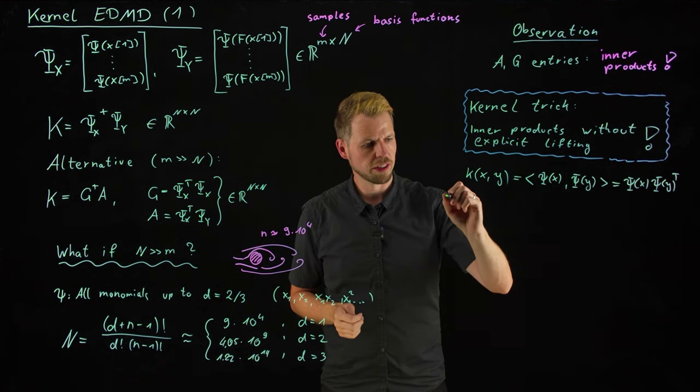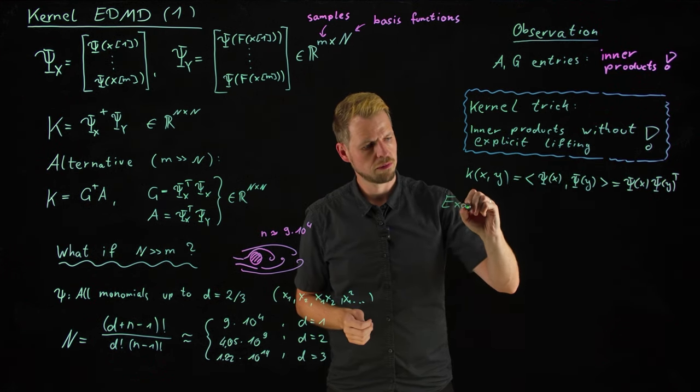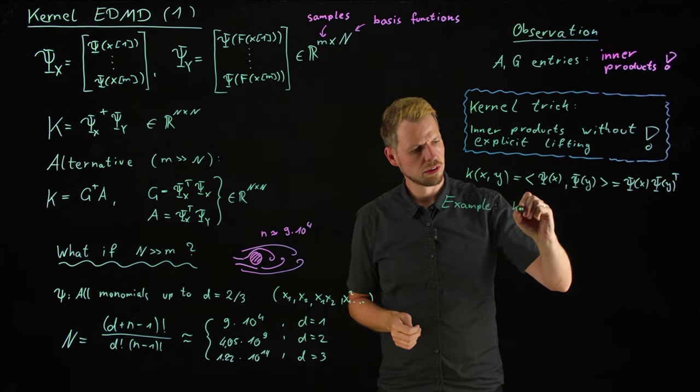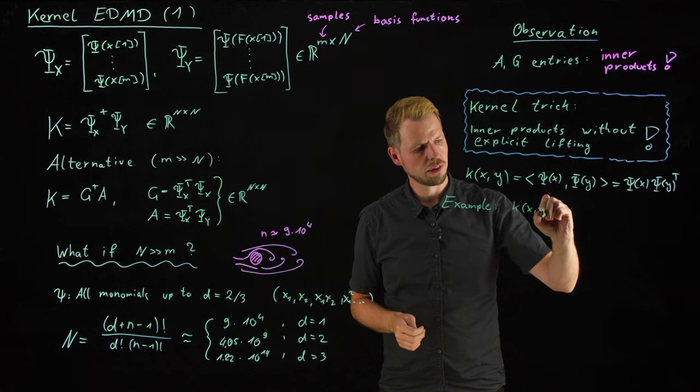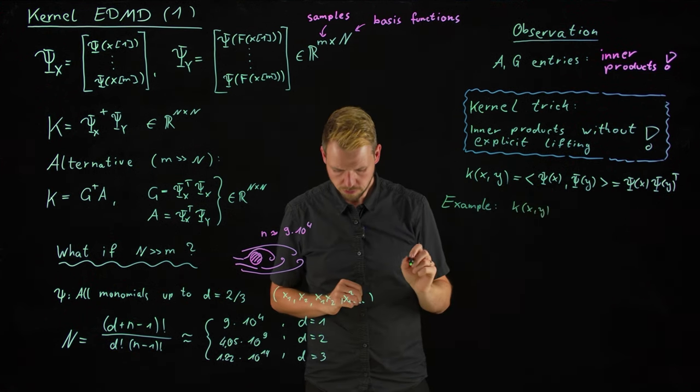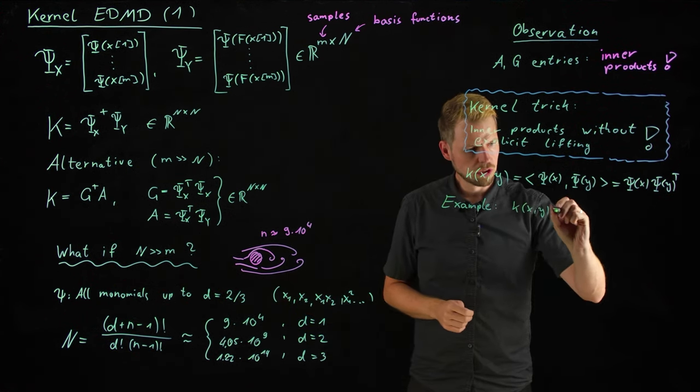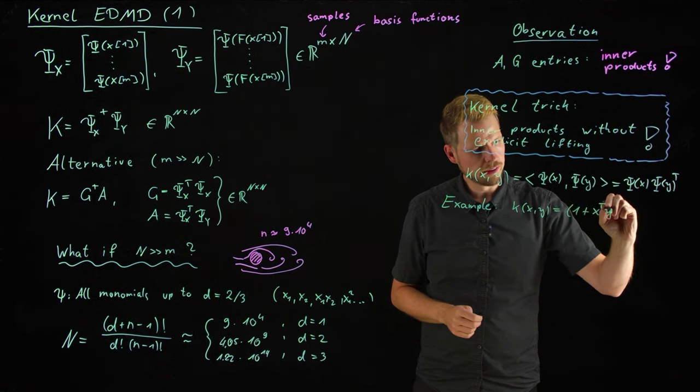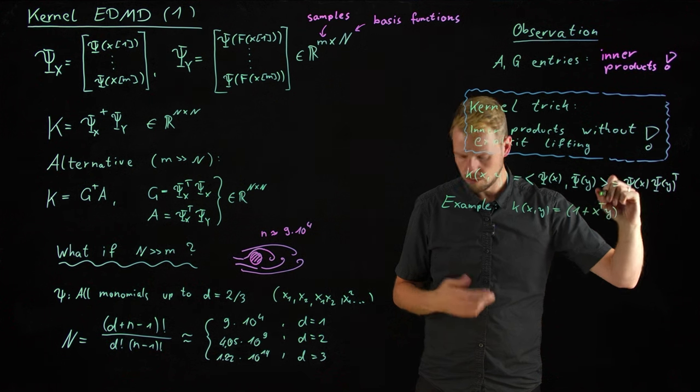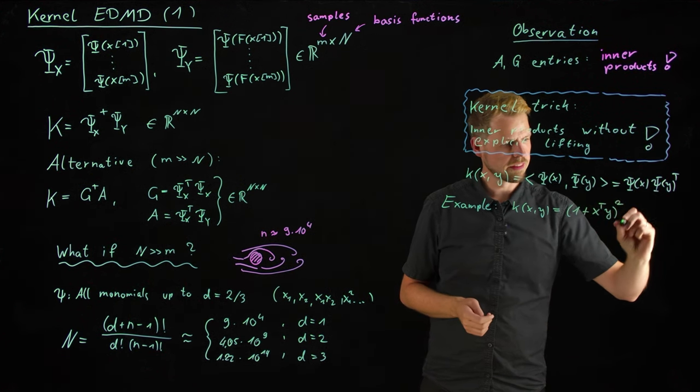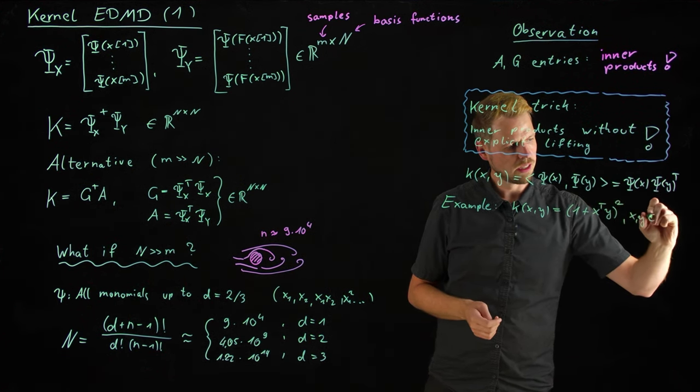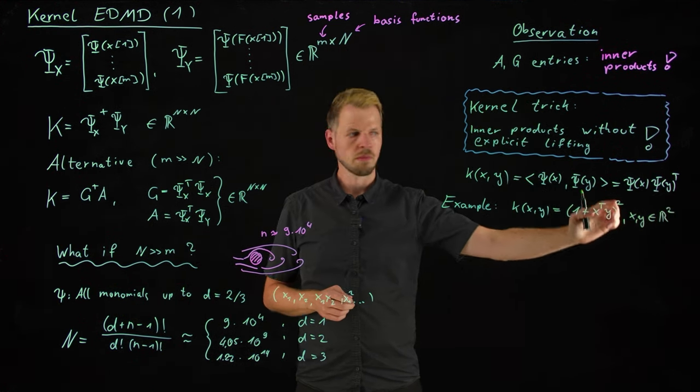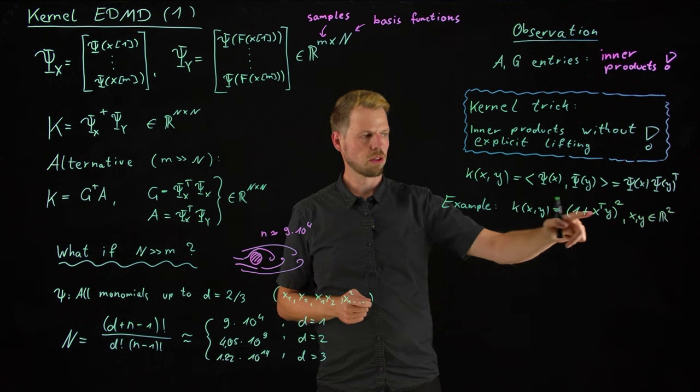So, I'm using the transpose here because we have always defined this as a row vector. All right. So, what you see is if we can evaluate the kernel function, the result would be the inner product of these lifted inputs, but we would like to avoid this lifting. And so, we are going to use the simplest example where we say that this kernel function, and you can define different kernels, this is the polynomial kernel, equal to 1 plus x transpose y, and then raised to the power of 2. And let's take as the example that x and y are two-dimensional numbers.